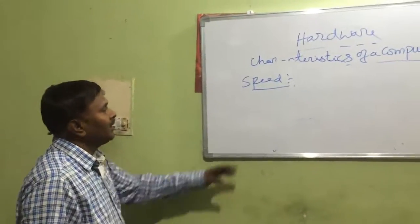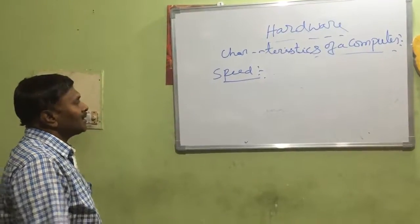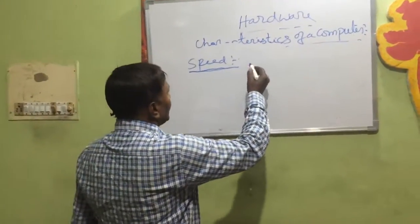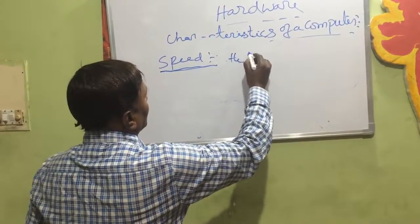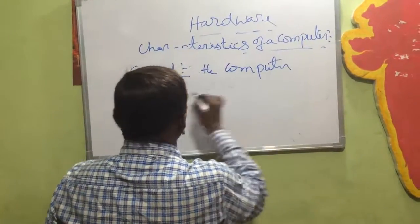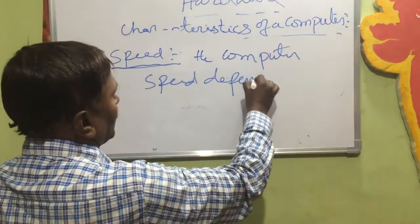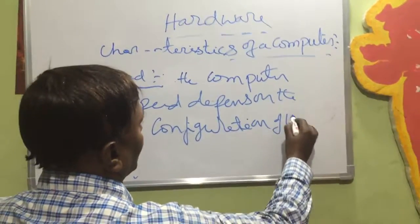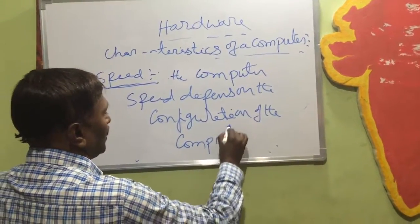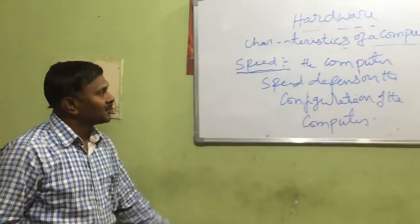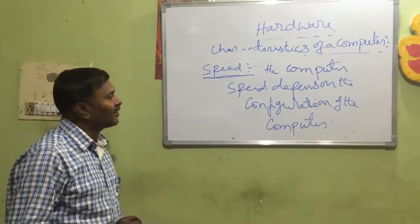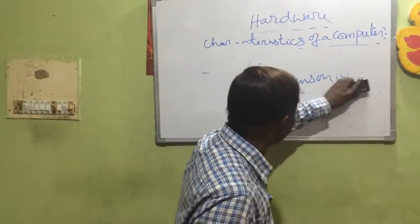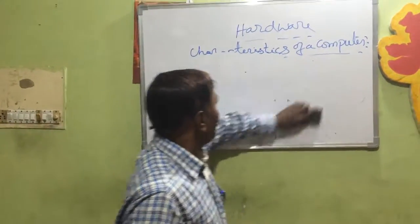The first characteristic is speed. The speed of the computer varies from computer to computer because it depends upon the configuration of the computer. But how can we measure the speed of the computer? The speed of the computer is measured in nanoseconds. And depending upon the type of the computer, the speed of the computer varies.